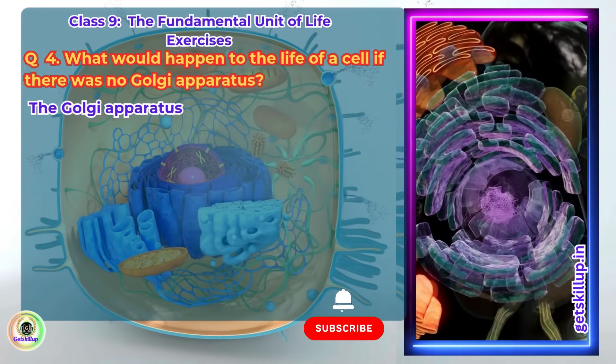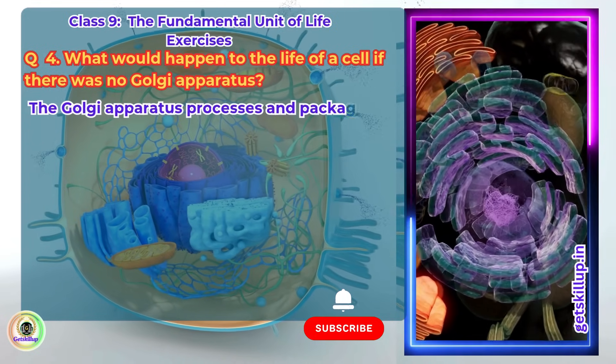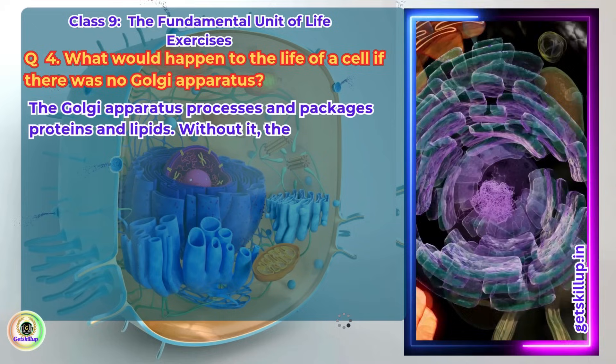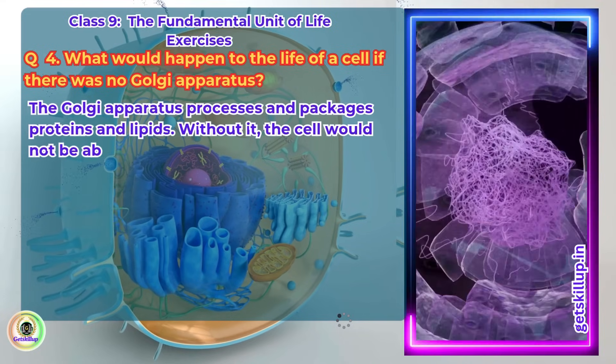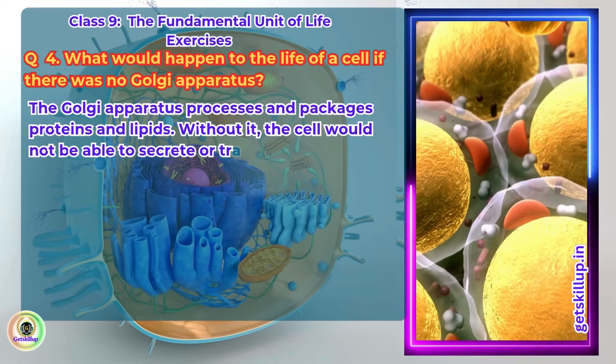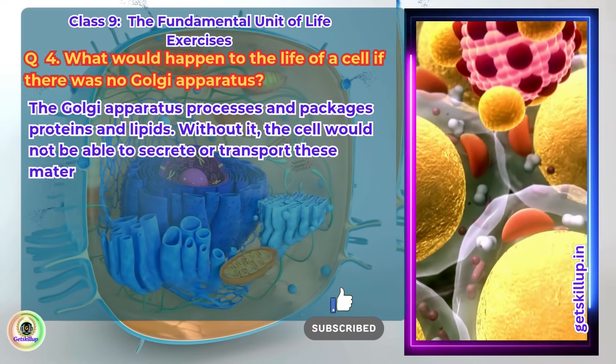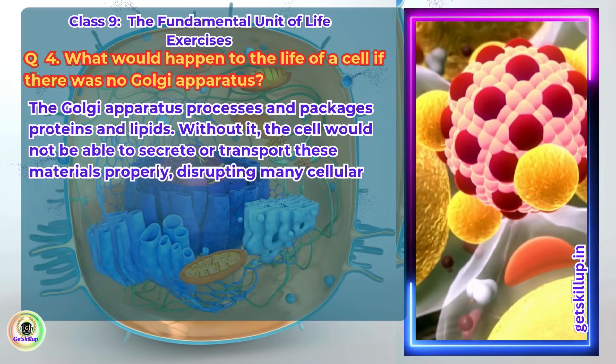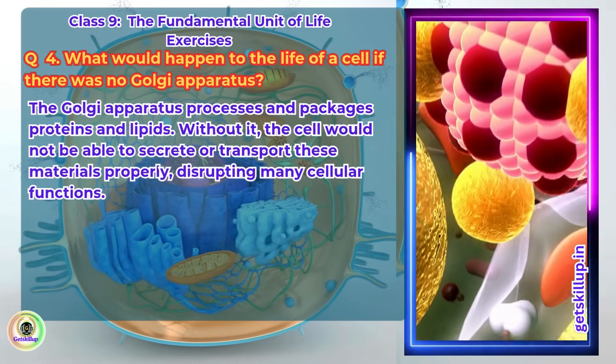The Golgi apparatus processes and packages proteins and lipids. Without it, the cell would not be able to secrete or transport these materials properly, disrupting many cellular functions.